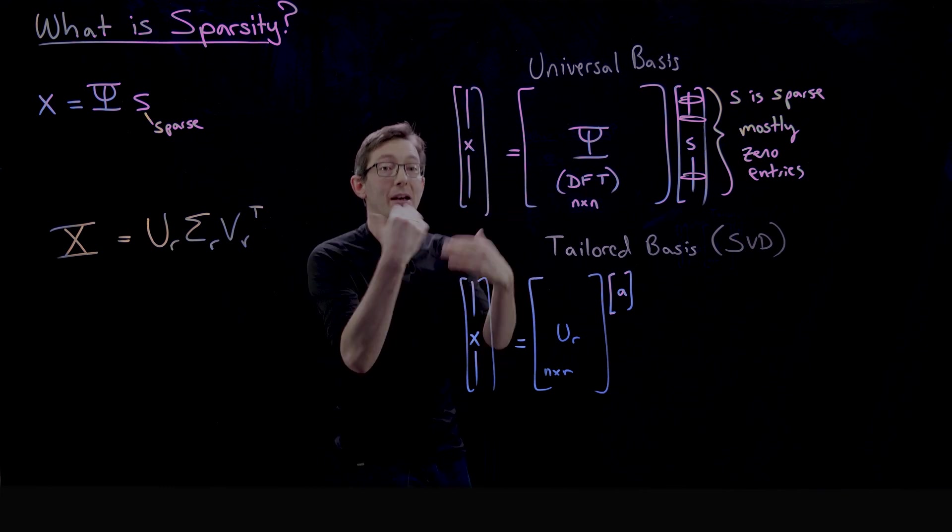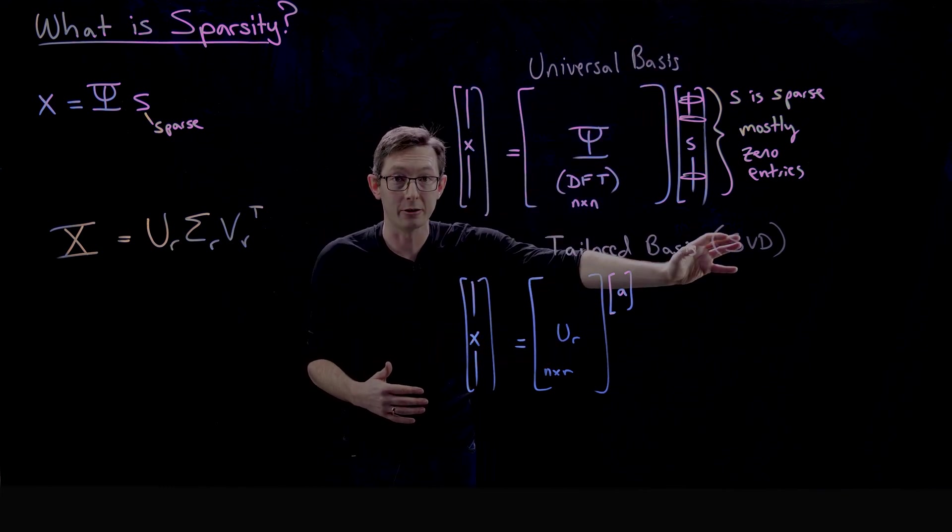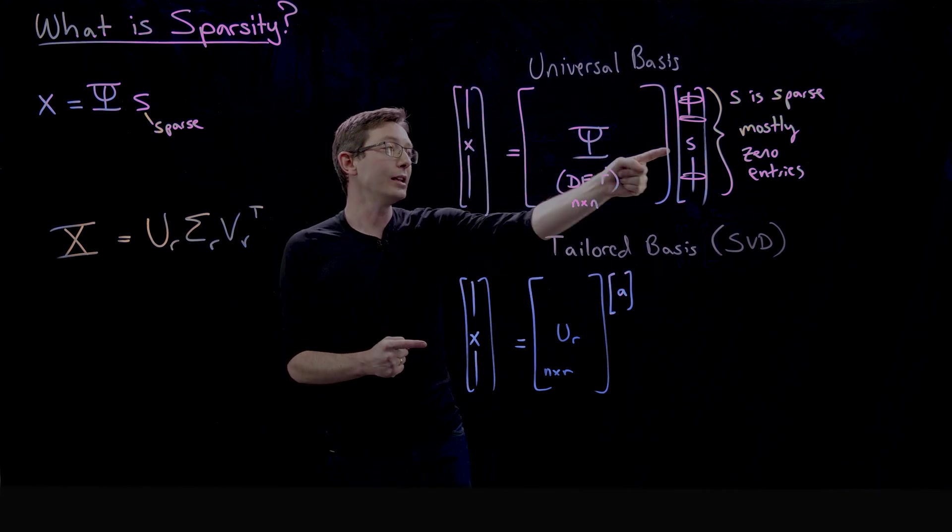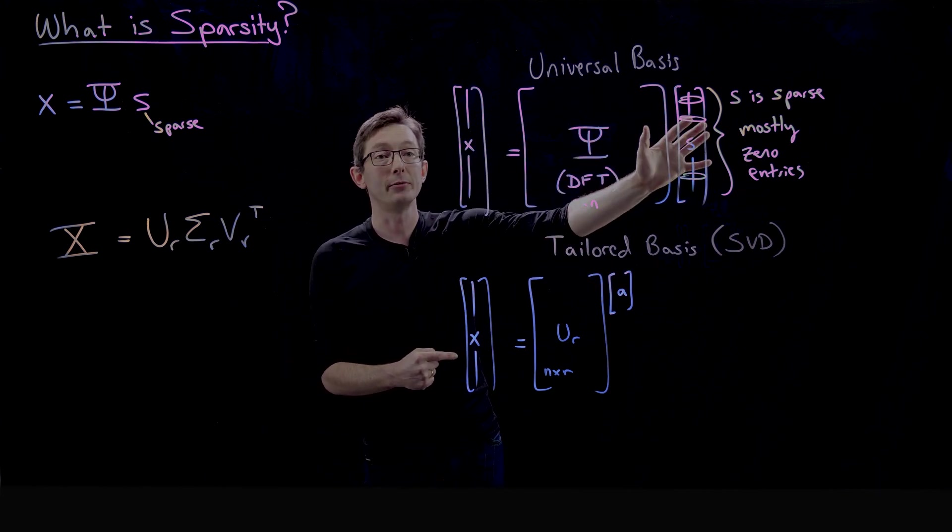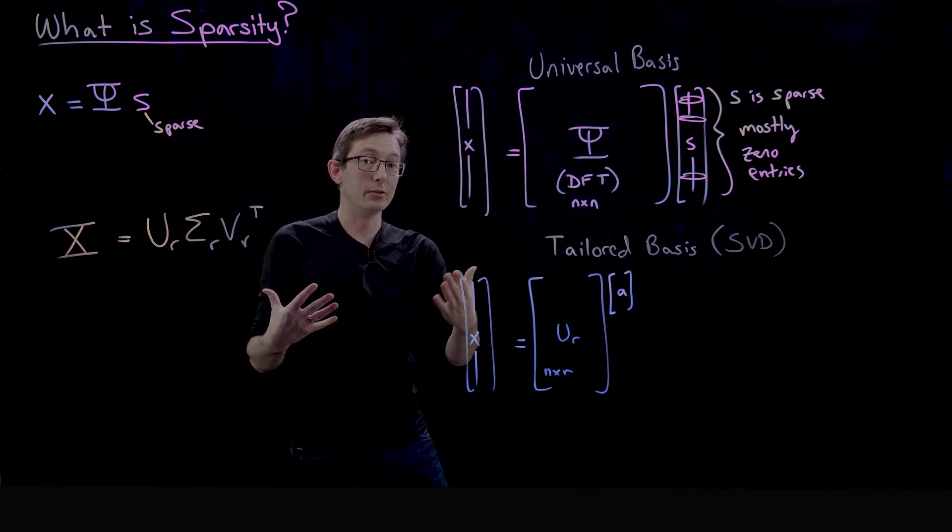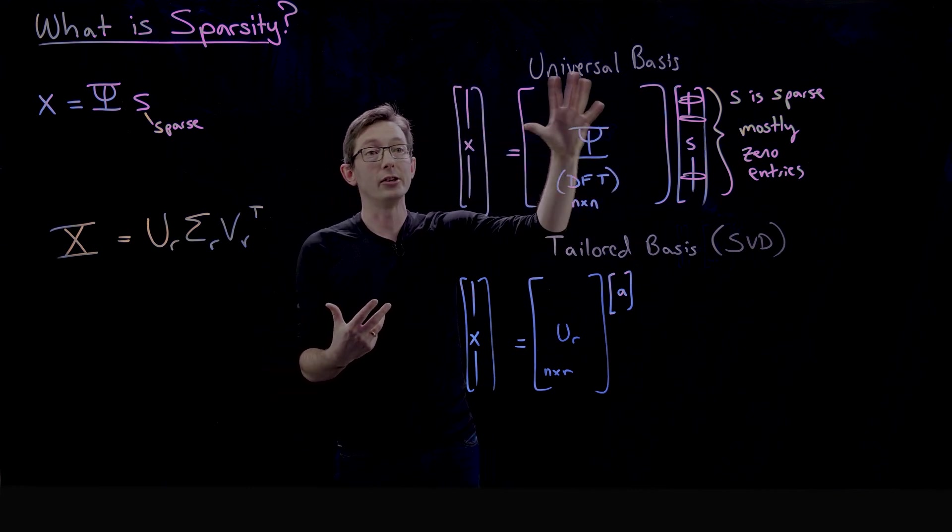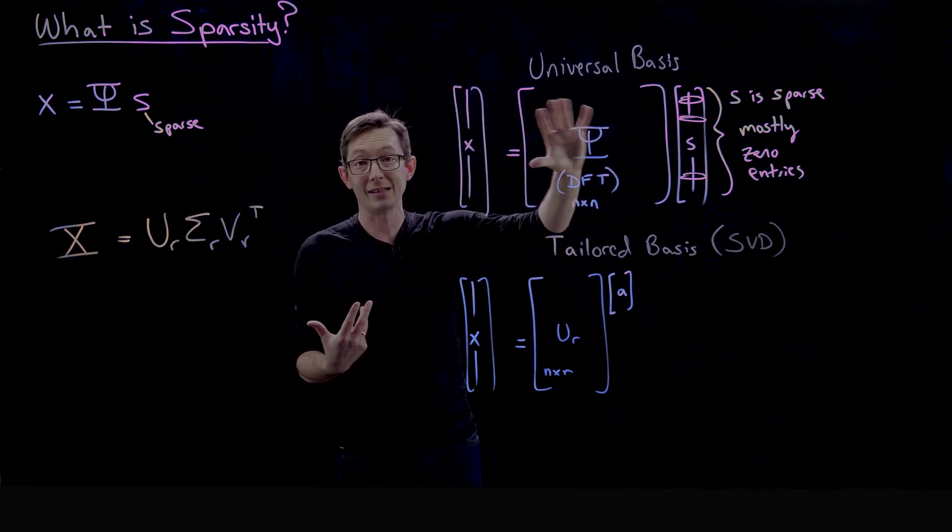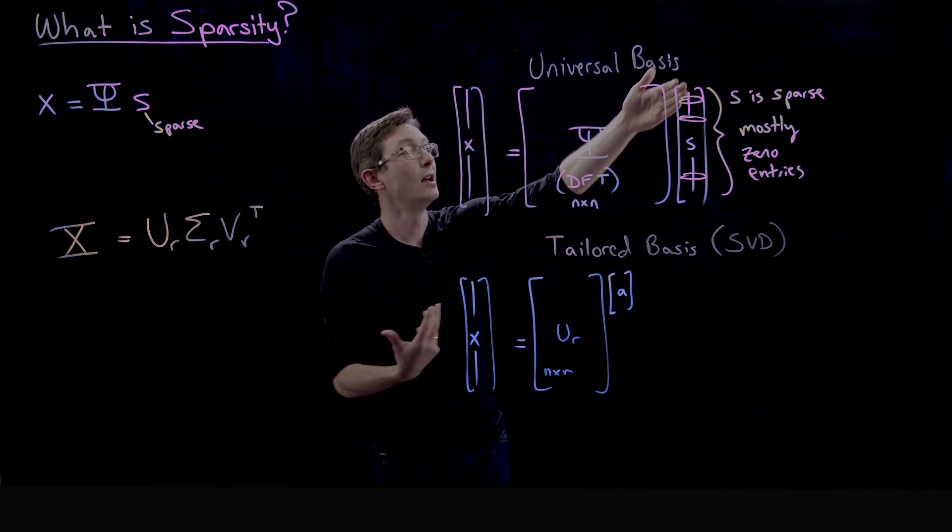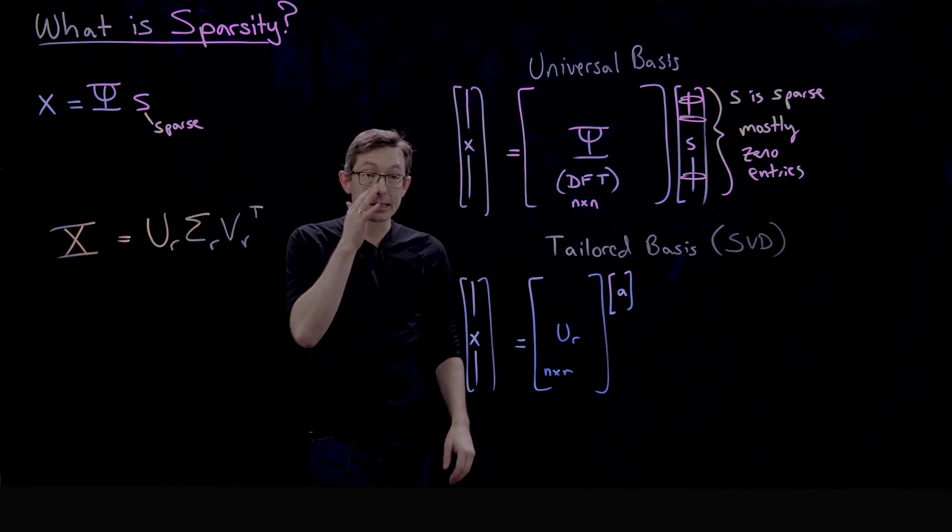So I can compress my signal in a universal basis, I can compress my signal in a tailored basis, but only this s vector in my universal basis is going to be sparse. So sparsity, usually what I'm referring to, is when you take a high dimensional signal and you represent it in some kind of a universal basis like Fourier transform or wavelets, then its representation becomes very, very sparse.